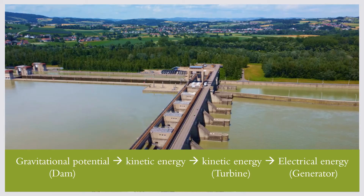So this is how the conversion of energy takes place. Gravitational potential energy in the dam or water reservoir — then it is released, going down, and becomes kinetic energy. This moving water moves the turbines, still kinetic energy. And this kinetic energy transforms into electrical energy in the generator, which is then transmitted to all parts of the community for consumption.